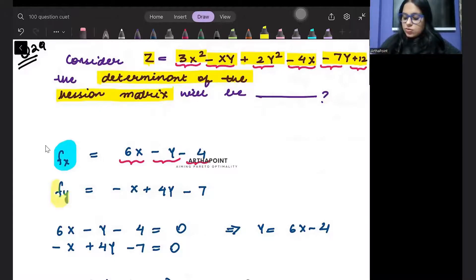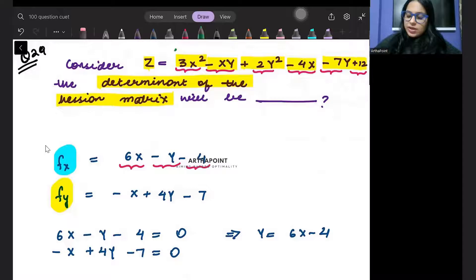Now we try to find out the differentiation with respect to y. So here there is no y. Minus xy differentiation will be minus x. 2y square differentiation will be 4y. Minus 7y differentiation will be minus 7. So what will you get? Minus x plus 4y minus 7.